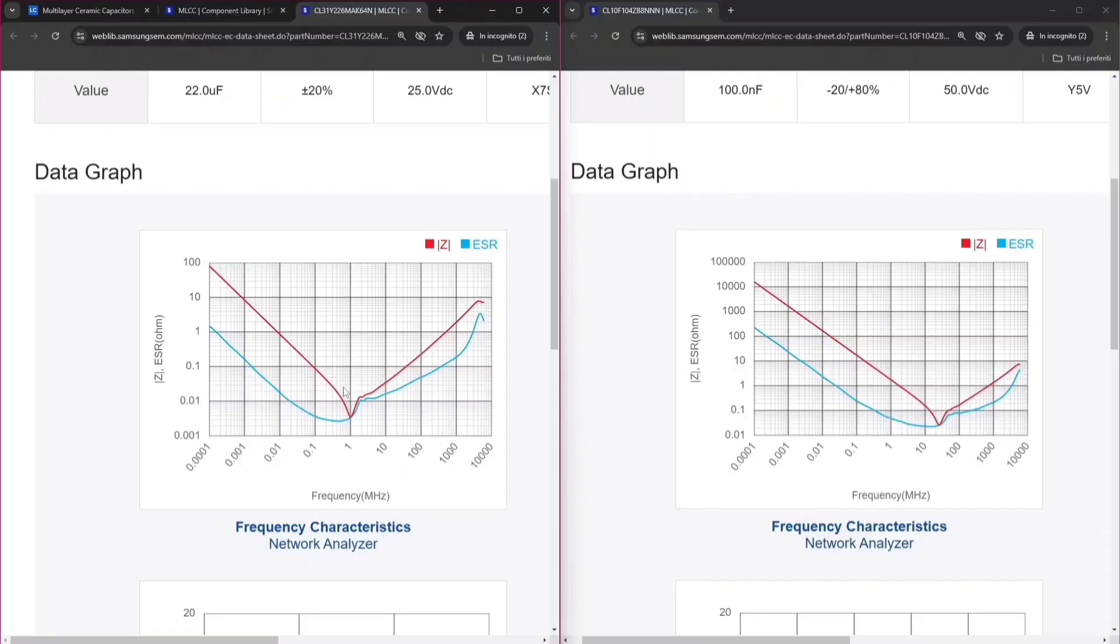Impedance and self resonant frequency will vary from capacitor to capacitor. So let's now compare two of them. On the left we have a 22μF 25V capacitor, and it has a 3.6mΩ at 1MHz. On the right instead we have a 100nF 50V capacitor, and it has a resistance of 25mΩ at 25MHz. So both impedance and self resonant frequency are different for those two capacitors.